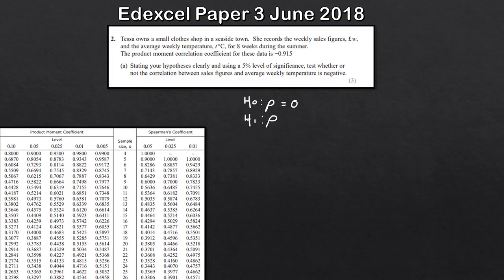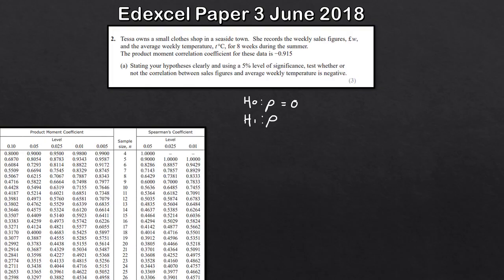For H1, there are three possible options: rho can be greater than zero, less than zero, or not equal to zero. Not equal to zero is a two-tailed test, which you should be familiar with from first year. In this video it is just a one-tailed test — either greater than or less than.